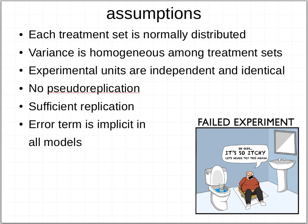Those same analyses have assumptions we must try to satisfy. Each treatment set is normally distributed — we have bell curves we're going to compare in each treatment set. The variance is homogeneous among the treatment sets, so the bell curves have about the same spread. We assume that the experimental units are independent and identical, meaning you could replace a unit in one treatment with a unit in another treatment without affecting the design before treatments were applied — so beakers or plots are interchangeable.